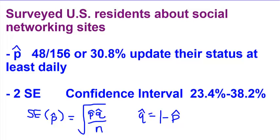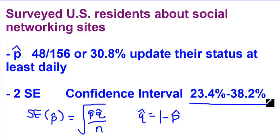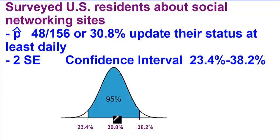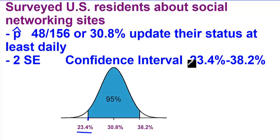So if we find our standard error, times it by two — because we're going to go out two standard errors — and add it and subtract it to our sample proportion, the 30.8%, we get a confidence interval of 23.4% and 38.2%. If we go out one standard error from our sample proportion we'd be about right here, and going out another gives us 38.2%. Same way going in the other direction: one standard error, then the second standard error gives us 23.4%. So our confidence interval is 23.4% to 38.2%.